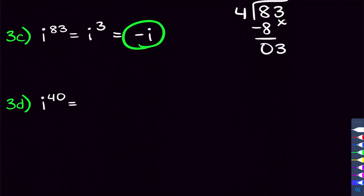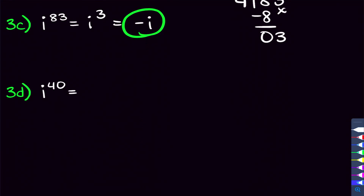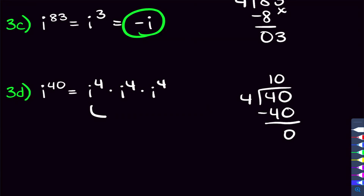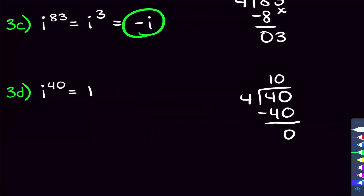For problem 3d, i to the 40th power: 40 divided by 4 gives 10 exactly, with a remainder of 0. That means we can fully break i to the 40th into ten i to the fourths, which is 1 times 1 times 1 ten times. So i to the 40th equals 1.